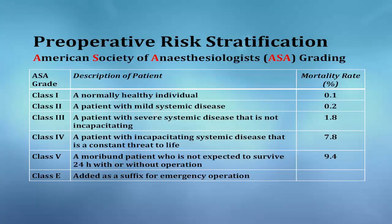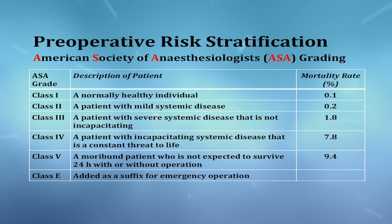The American Society of Anesthesiologists has graded patients into four major grades or classifications according to an increasing risk of mortality. Class 1 is a normal healthy individual, class 2 is a patient with mild systemic disease, class 3 is a patient with severe systemic disease, and class 4 is a patient with incapacitating systemic disease.